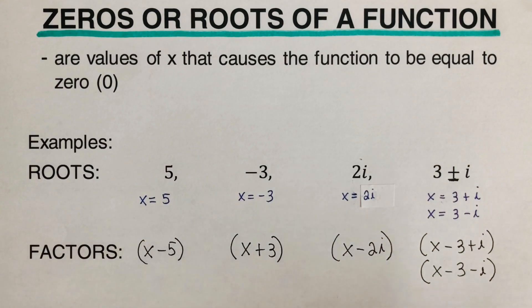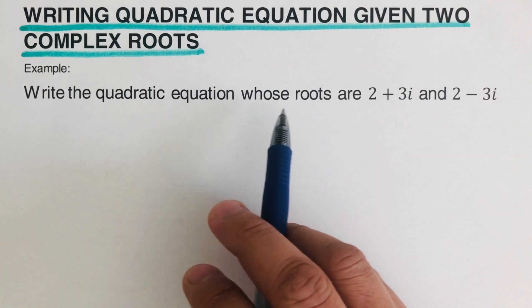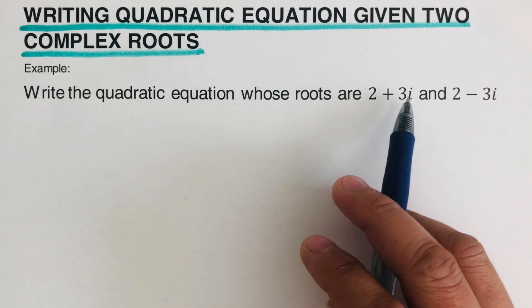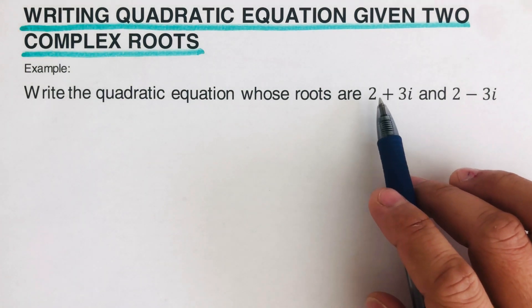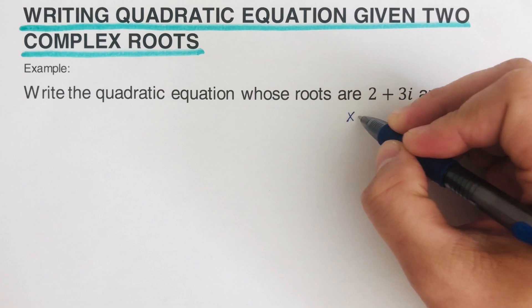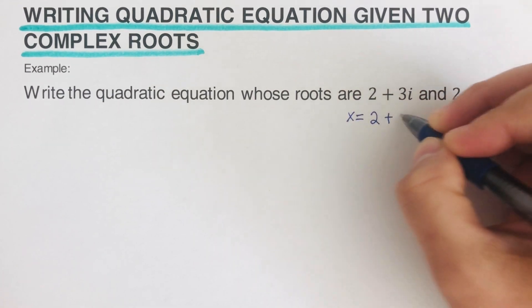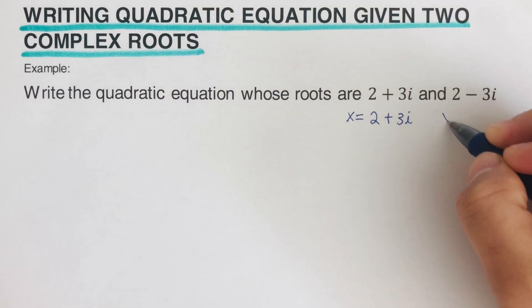Going back to the example: write the quadratic equation whose roots are 2 + 3i and 2 − 3i. The first step is to express these as x = 2 + 3i and x = 2 − 3i.